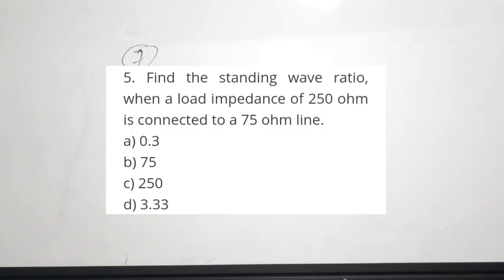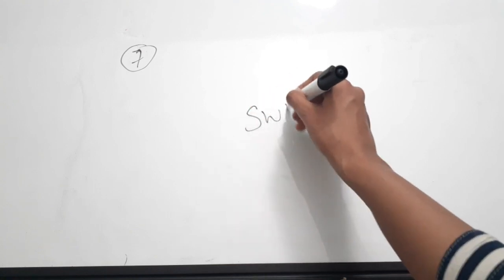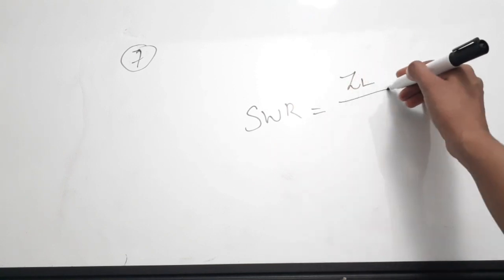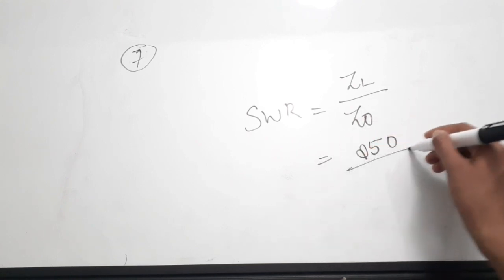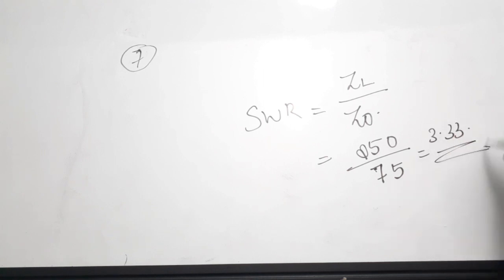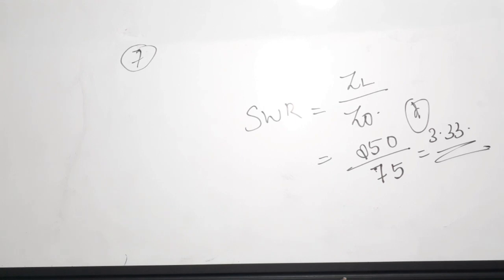Seventh question is from EMT. Find the standing wave ratio when the load impedance is 250 ohms connected to a 75 ohm line. The equation for SWR is: SWR = ZL / Z0, where ZL is the load impedance and Z0 is the characteristic impedance. So SWR = 250 / 75 = 3.33. The correct answer is option D.